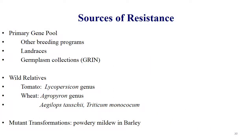Sources of resistance include the primary gene pool utilized for breeding programs, line races, germplasm collections, wild relatives — for example in tomato the Lycopersicon genus other species, in wheat the Agropyron genus, Aegilops tauschii, Triticum monococcum — and mutant transformations, for example in powdery mildew of barley.